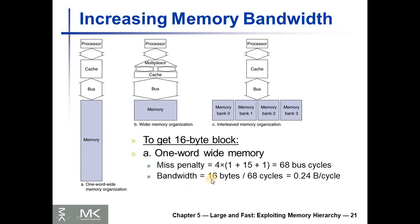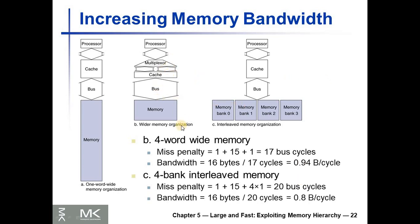The bandwidth for the one-word-wide organization is 16 bytes / 68 cycles = 0.24 bytes per cycle. For the second organization — a wider memory where the bus, cache, and memory are all wider — we get four words in one cycle. The miss penalty is one cycle to send the address, 15 cycles latency, and one cycle for four words, totaling 17 bus cycles, giving 0.94 bytes per cycle.